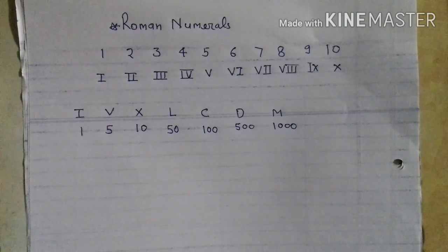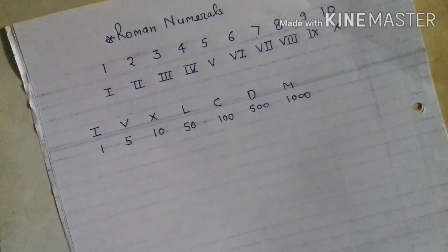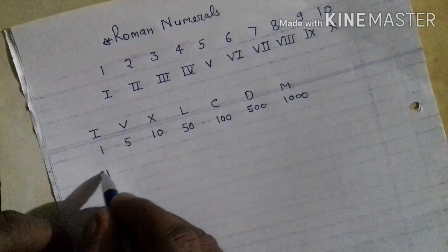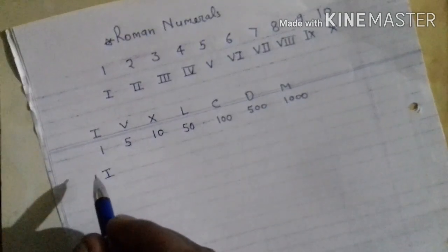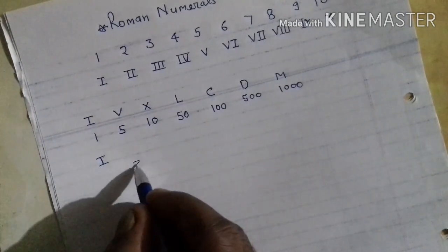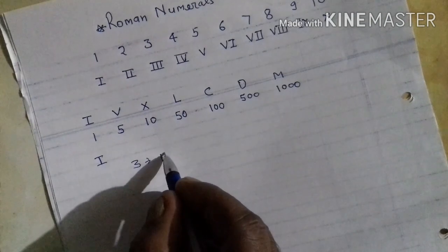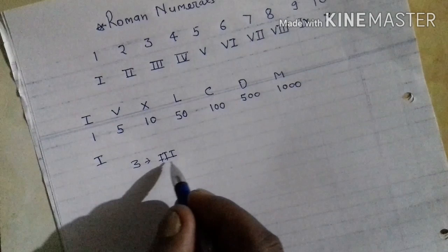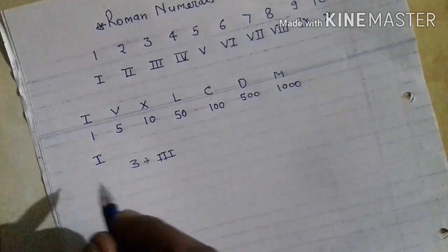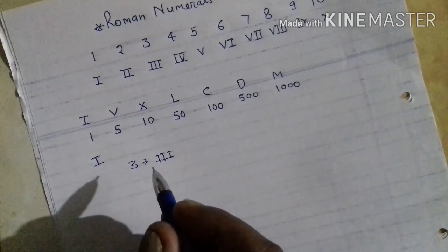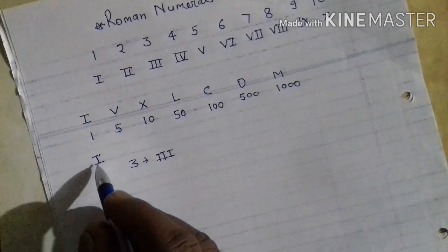Now we learn the rule of writing Roman numerals. I is repeated only 3 times. This symbol I is repeated only 3 times. Suppose we want to write 3 — we can write three I's: 1 plus 1 plus 1 equals 3. But we cannot write I 4 times.